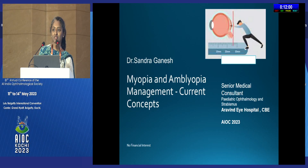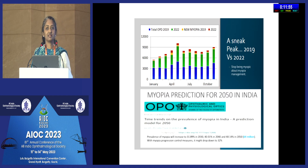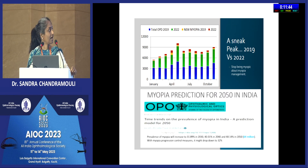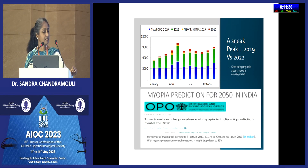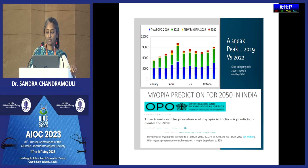I'll be talking about two of the most current topics in pediatric ophthalmology: myopia and amblyopia management. This slide shows myopia predictions between 2019 and 2022. Across the years, we have seen more new myopia cases. Looking at time trends in the prevalence of myopia in India, it increases to around 31% in 2010, 40% in 2040, and around 50% in 2050. With myopia interventions, this can be brought down to around 32% - a very significant reduction.